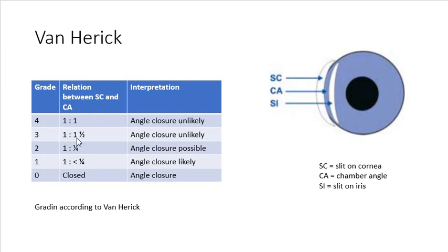If the relationship is 1 to 1 and a half, so the chamber angle is smaller, then this is assigned a grade 3. Angle closure is unlikely in this case. If the relationship is 1 to a quarter, so this area is getting smaller still, angle closure is likely, and that's assigned a grade 1. And 0 is a completely closed angle.